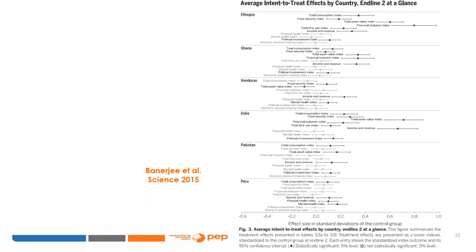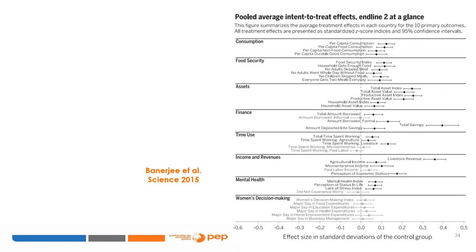A figure presents a clever graphical way of showing effects for several outcomes across the six countries, with positive and significant effects in different dimensions, though only a few are consistent across the board. Pooled results for all countries show substantial effects on consumption, food security, and assets, positive effects on financial outcomes such as borrowing, higher revenue from livestock, and better mental health indices.